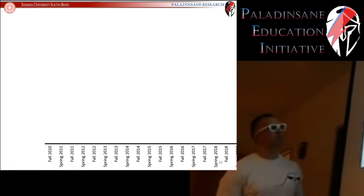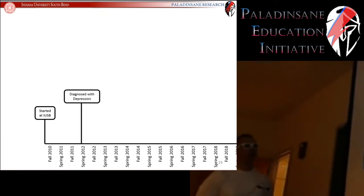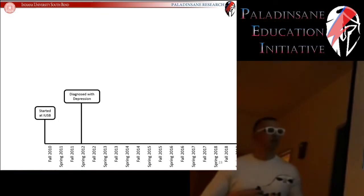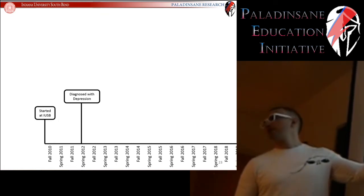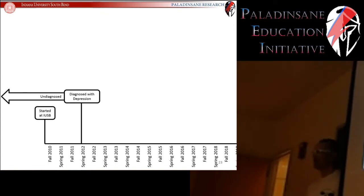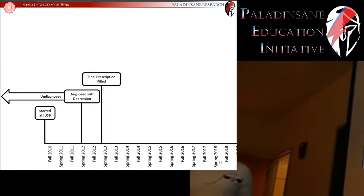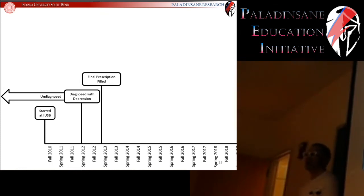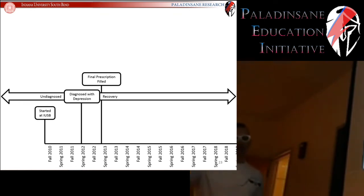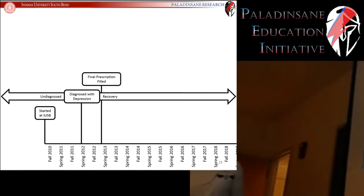This is a timeline of my time here at IUSB, starting in fall 2010. Around spring 2012 is when I got diagnosed with depression. I don't know when I developed it because I was undiagnosed for years due to the stigma surrounding mental illness. I was on a prescription as well as cognitive behavioral therapy. I got my last prescription filled in 2013, but it's an ongoing process of recovery I'm still going through. Many more good days than bad days — it's two steps forward, one step back, but a lot more steps forward.